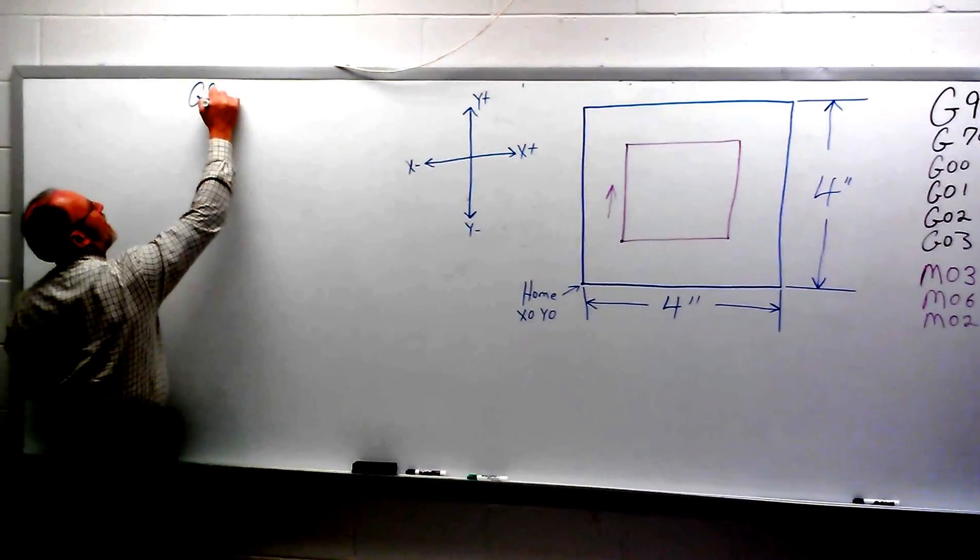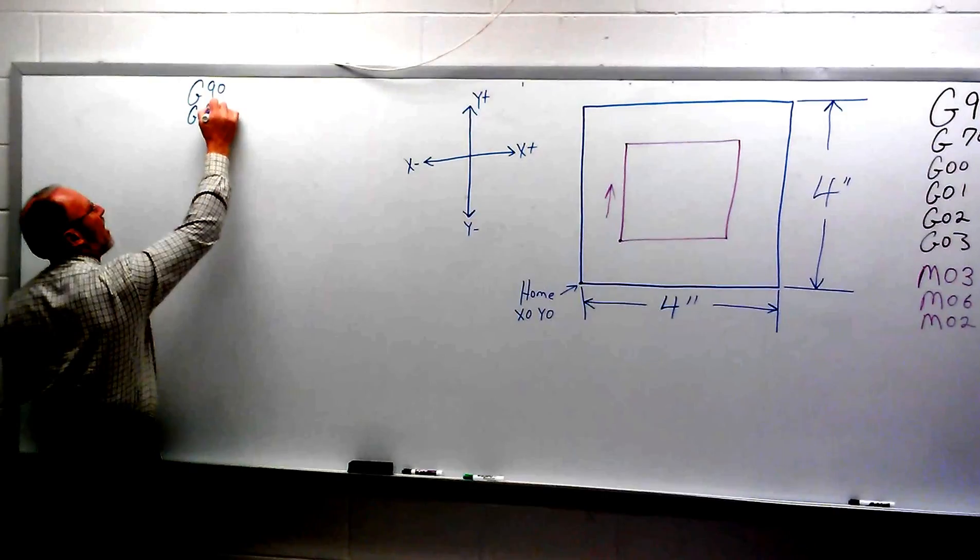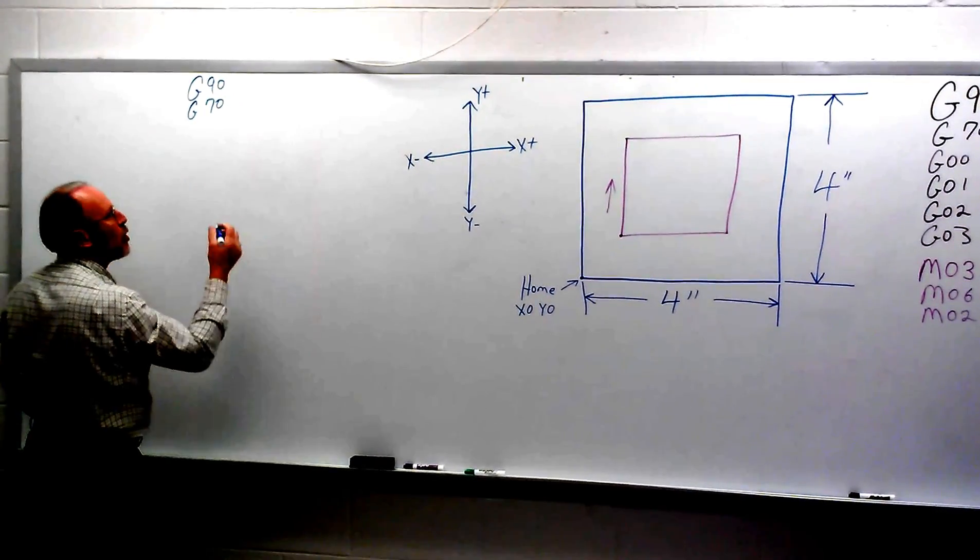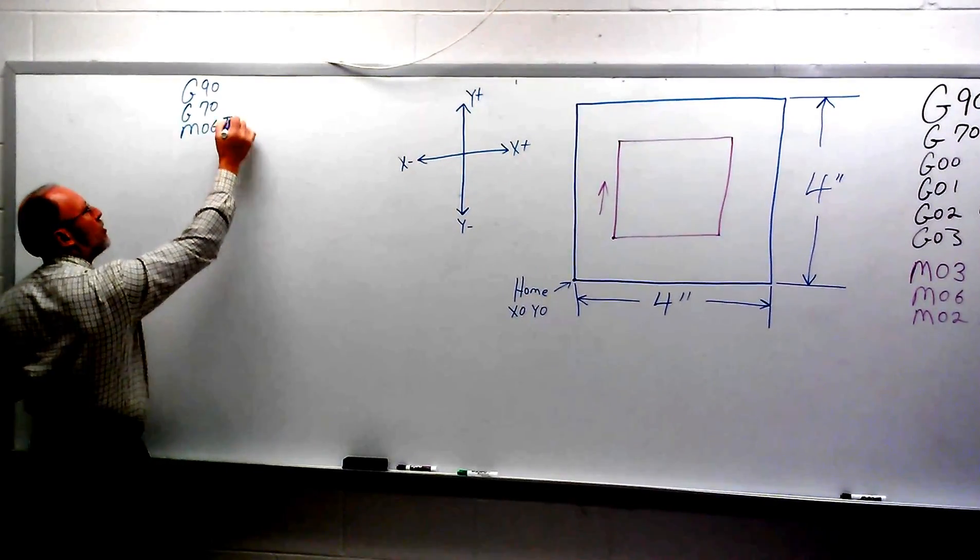It's going to go with a G90, that turns our absolute programming on. The next line of code is going to be a G70. The next thing I want to do is give it a tool. That will be an M06. In this case, we're using tool number 5, which happens to be an engraving tool.